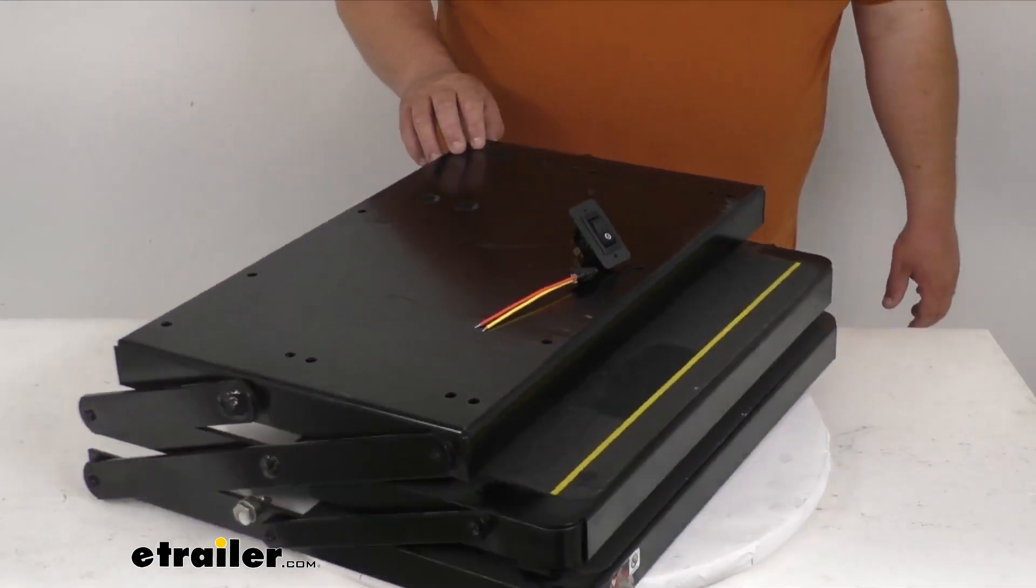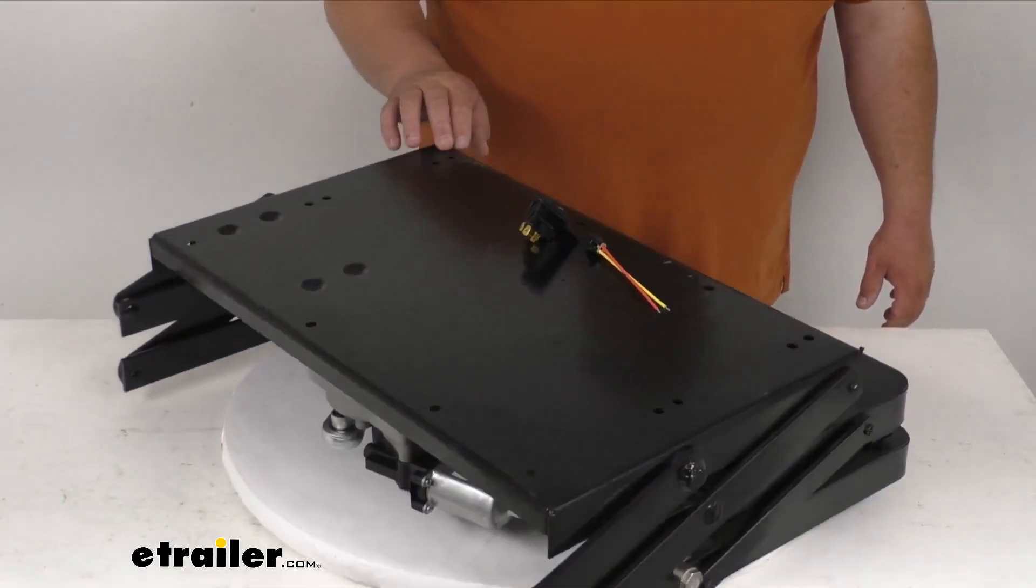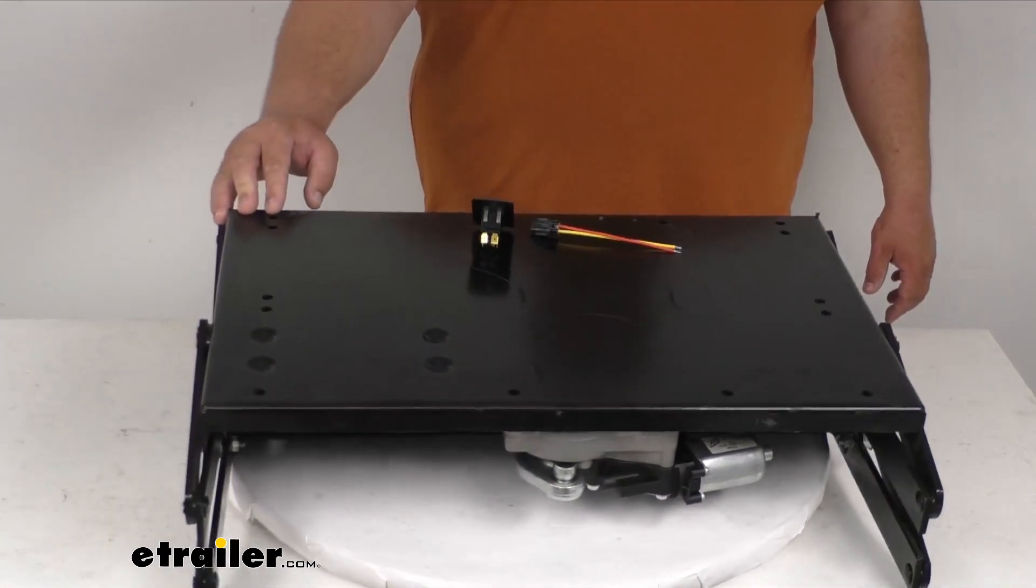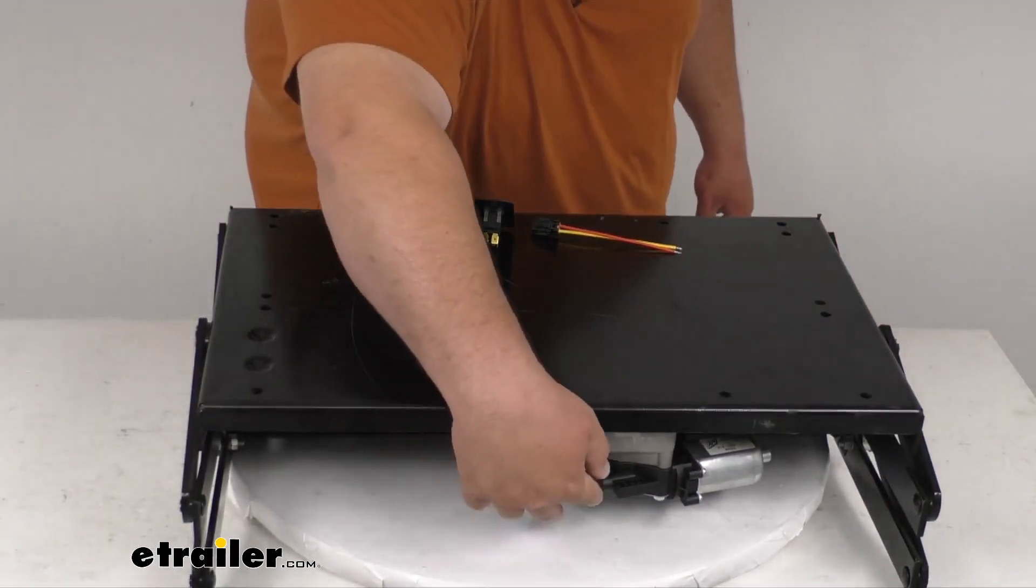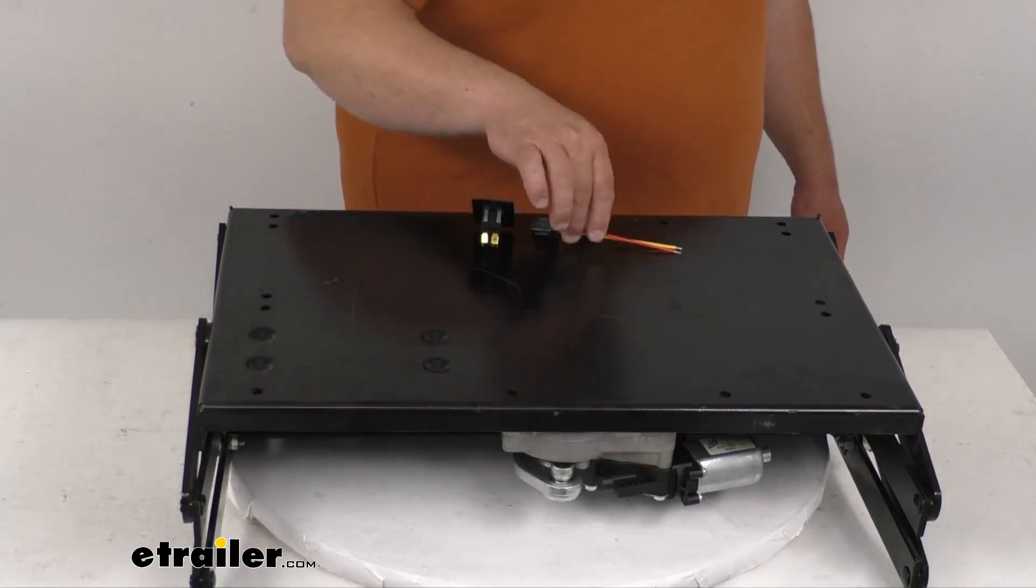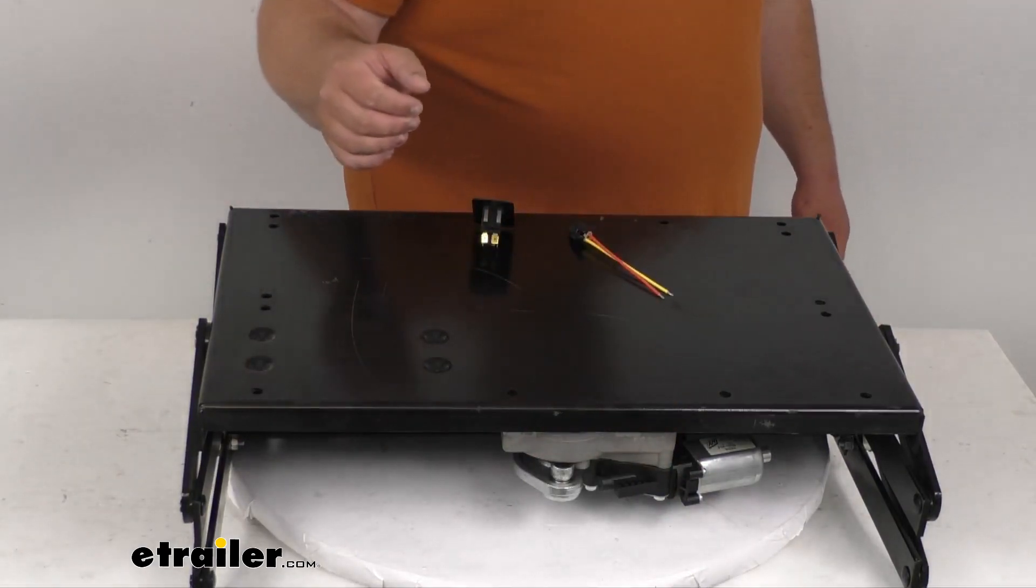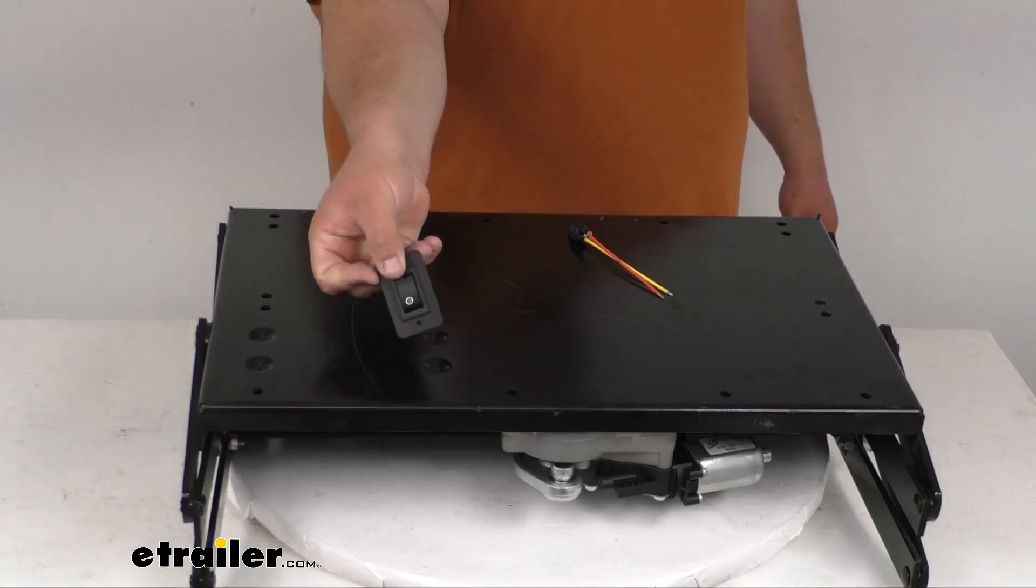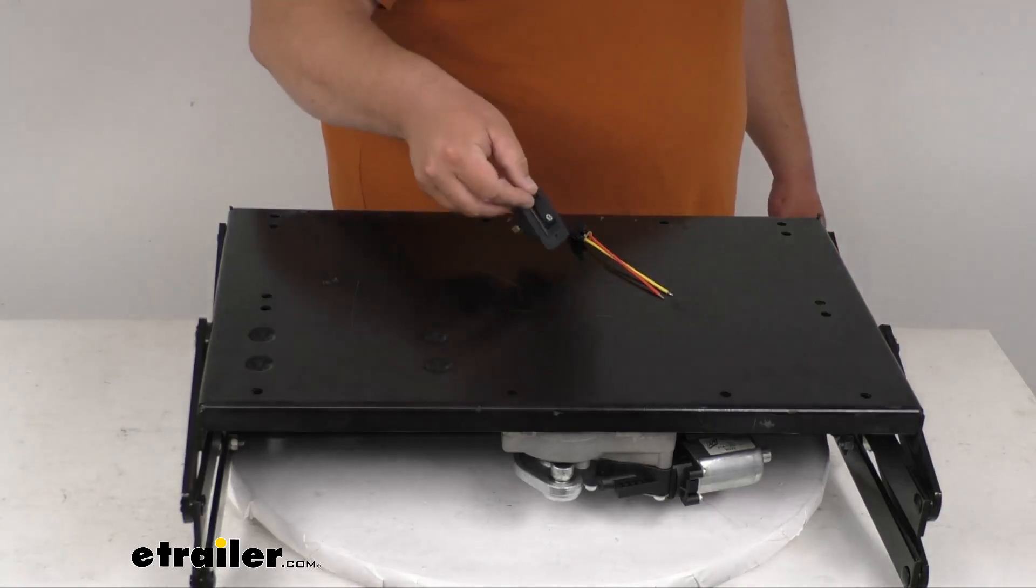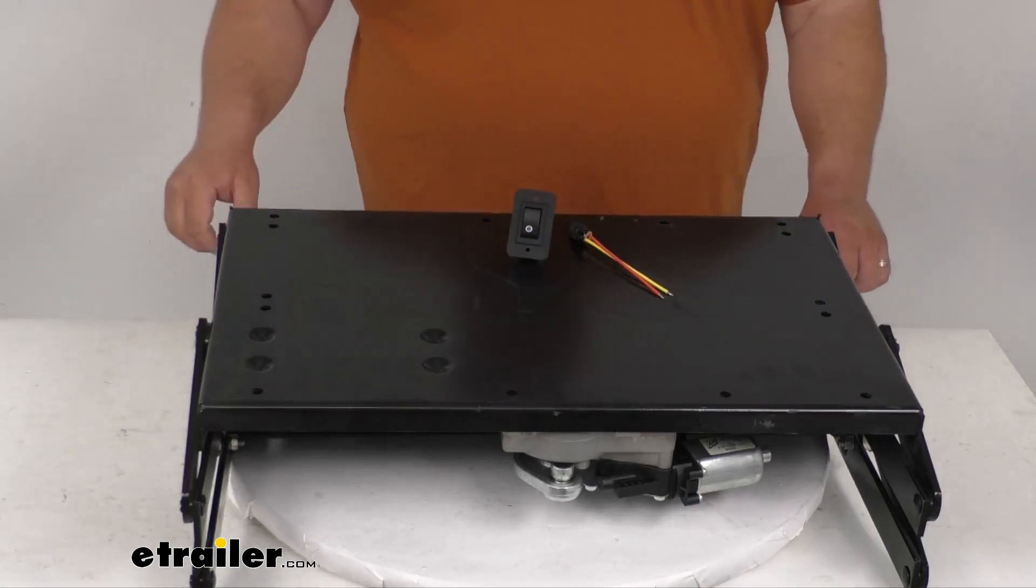Those would mount directly to the motor as far as the plug-in. The plug would go down here on the motor. And then you would wire it up accordingly to your RV camper. And then the switch obviously would get mounted up most likely interior at the door area.